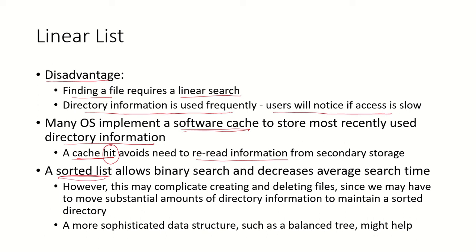We can also keep the linear list in a sorted manner, which allows for binary search and decreases the average search time. However, keeping a sorted list may complicate creation and deletion of files, since a lot of directory information has to be carried from the hard disk to maintain this sorted directory. A more sophisticated data structure like a balanced tree can help here.